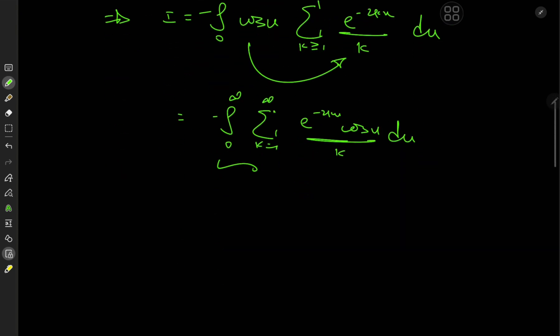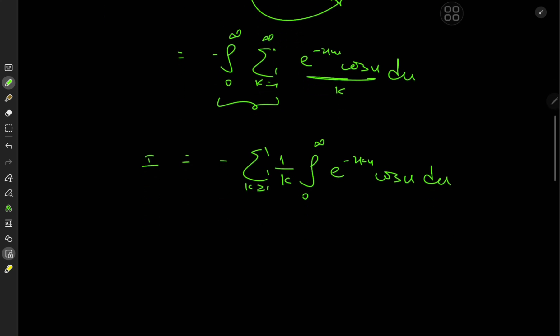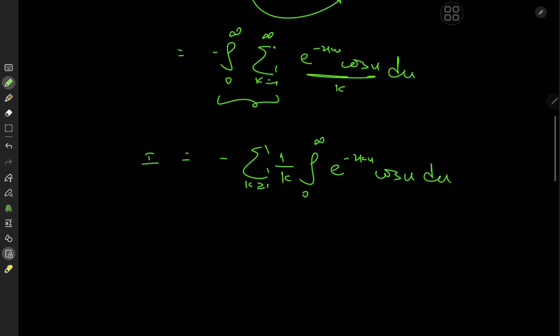We can switch up the order of the integration and summation operators because there are no problems regarding convergence, clearly. So we have negative sum over k of the integrals from 0 to infinity e^(-2ku) times cosine(u) du. And we can take the 1 over k term outside because it's independent of the variable of integration, which in this case is u. Okay, cool. That was nice so far.